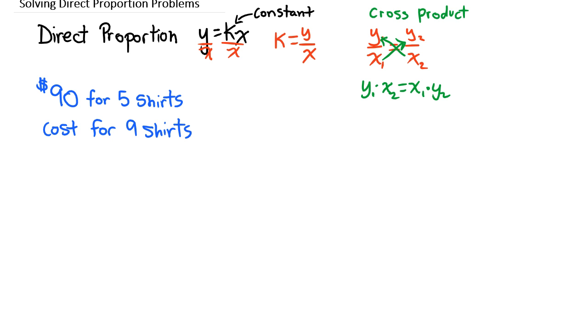So let's start by taking a look at this concept of cost divided by the number of shirts. We know that because of the setup here, this proportion is k equals the cost, which we're calling y, divided by our number of t-shirts, which we're calling x.